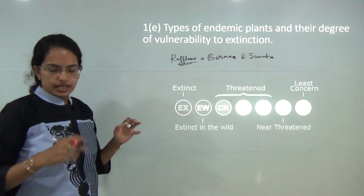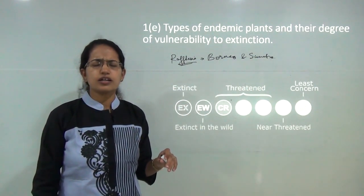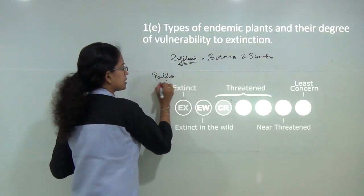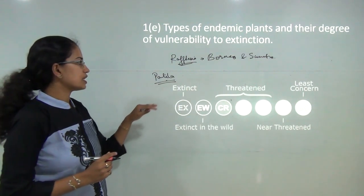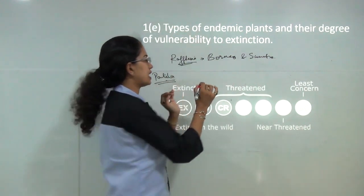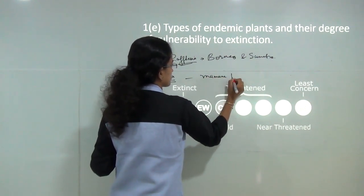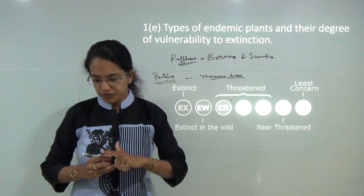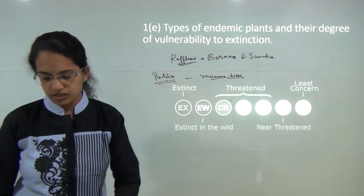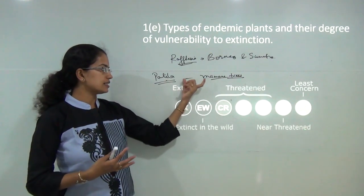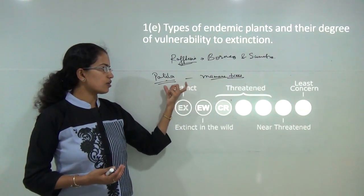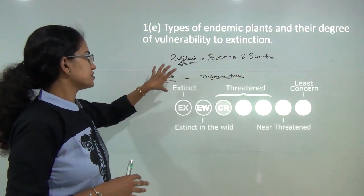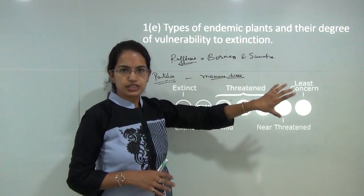Then you have the Hawaiian honey creepers, also called Palila, which are found on Manane trees. They are endemic to Hawaii, and the destruction and waterlogging in that region has led to destruction of their native habitat, putting this species on the verge of extinction.